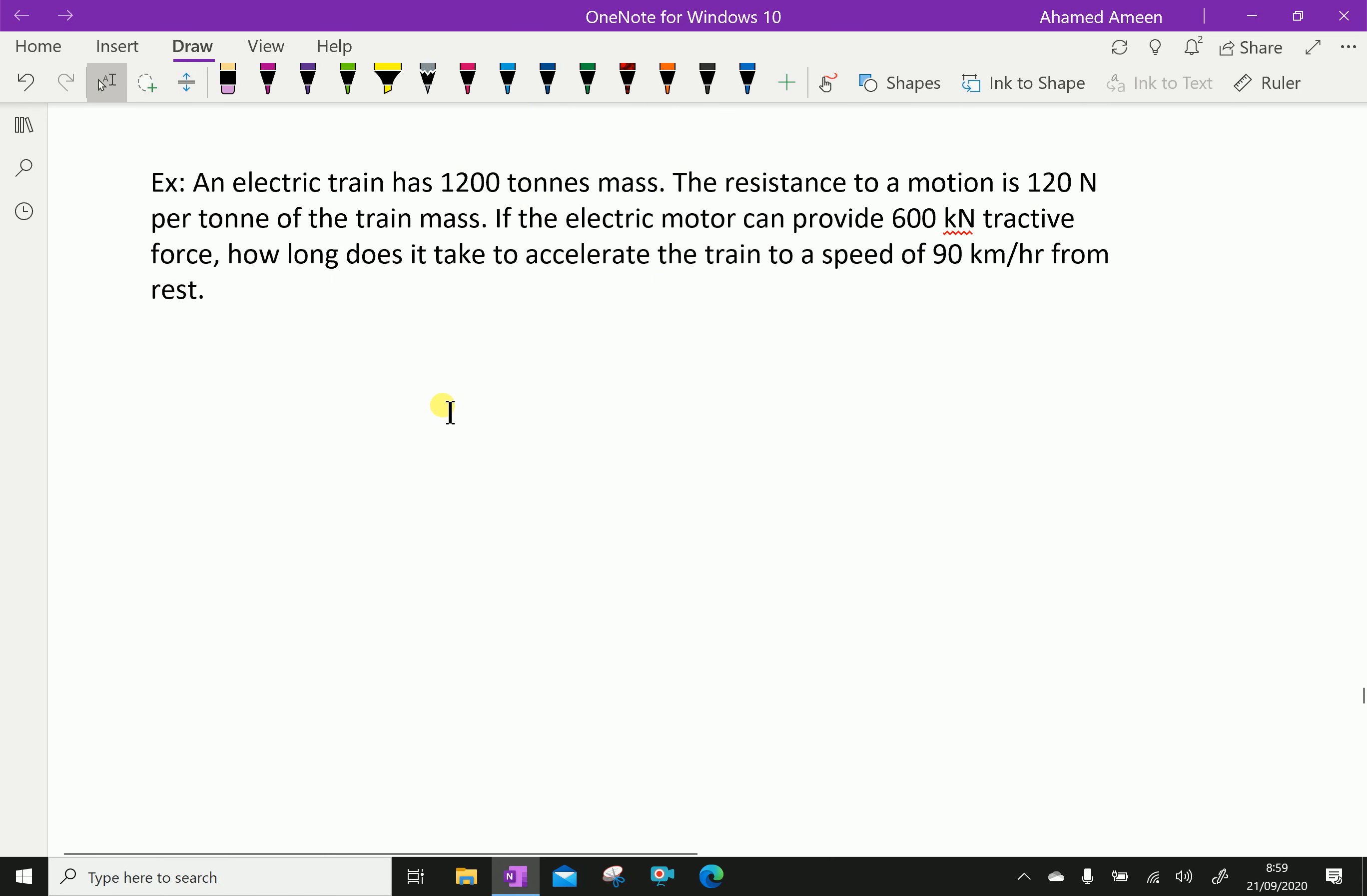Next question: An electric train of 1200 tons mass has resistance to motion of 120 Newton per ton. If the electric motor can provide 600 kilonewton tractive force, how long does it take to accelerate the train to speed of 90 kilometer per hour from rest?